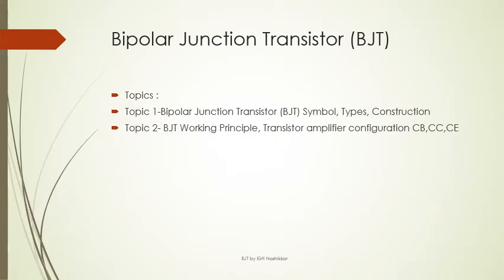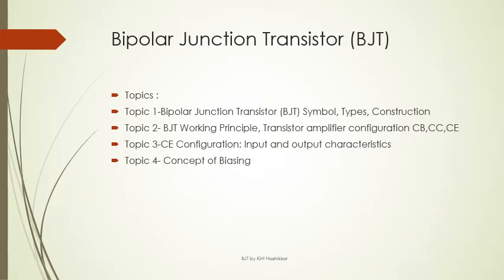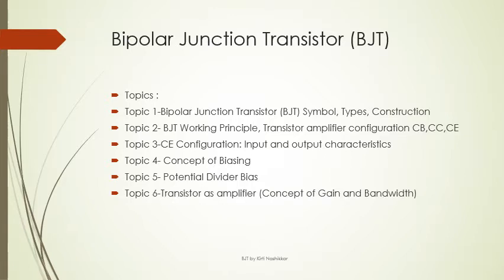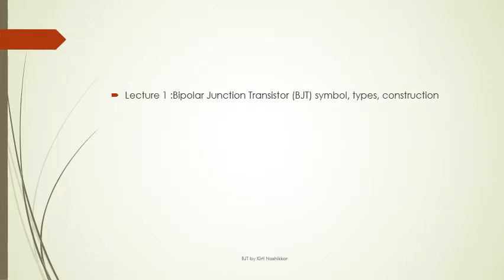Then its working principle, transistor amplifier configurations, its input and output characteristics, concept of biasing, potential divider bias, and we are going to discuss about the transistor working as the amplifier. So from today let us start the bipolar junction transistor.